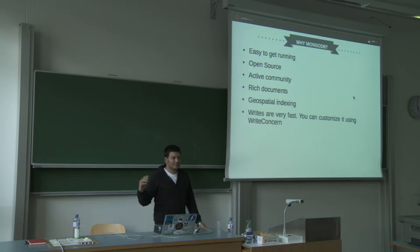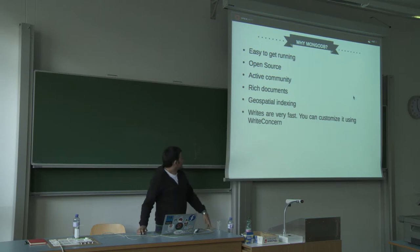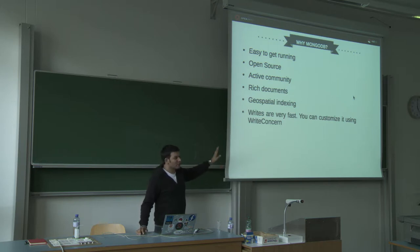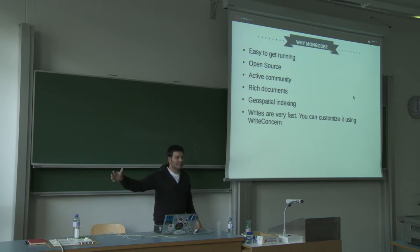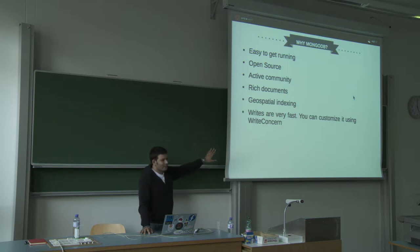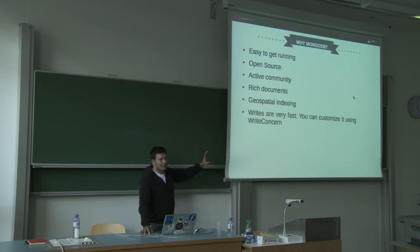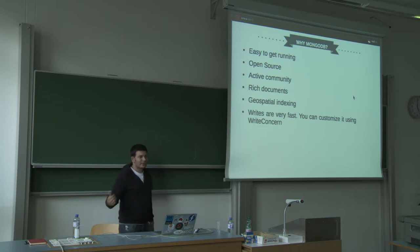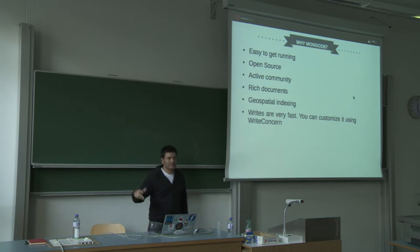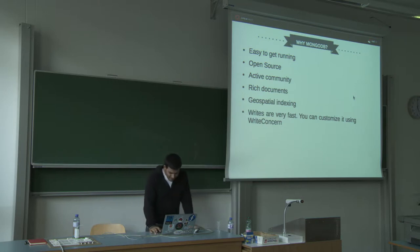Why use MongoDB? It's very easy to get started — download a zip from mongodb.org and you're running. It's free and open source with an active community — Stack Overflow and Google Groups have plenty of answers. You can store rich documents in a single collection. It has built-in geospatial indexing for location-aware applications. Its writes are very fast because it follows an asynchronous paradigm — it doesn't wait for data to be written to disk. You can configure durability using write concern.